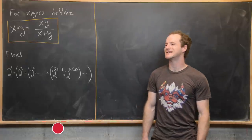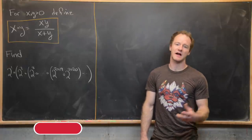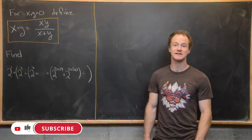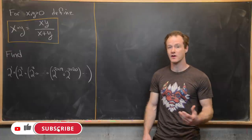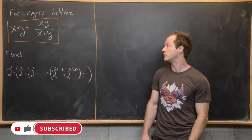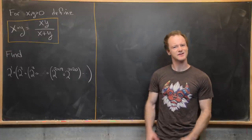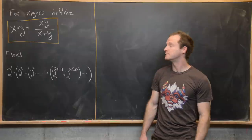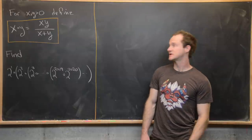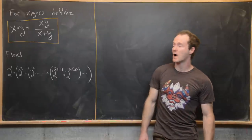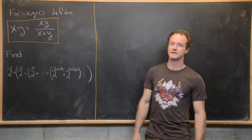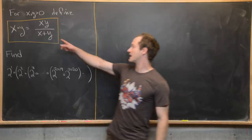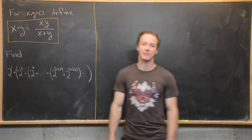Here we're going to look at a problem that was inspired by a question from a 2017 math contest held by Carnegie Mellon University. So I'll let you guys find that if you want to. But here's the setup: for x, y positive real numbers, we define the following operation.